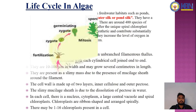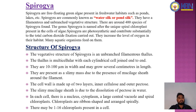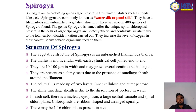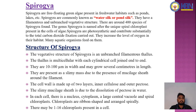Next is Spirogyra. Spirogyra are free-floating green algae present in freshwater habitats such as ponds and lakes. Spirogyra are commonly known as water silk or pond silk. They have a filamentous and unbranched vegetative structure. There are around 400 species of Spirogyra. The genus is named after the spiral chloroplast present in the cells. Spirogyra are photosynthetic, contribute to carbon dioxide fixation, and increase oxygen levels in their habitat. Many aquatic organisms feed on them.